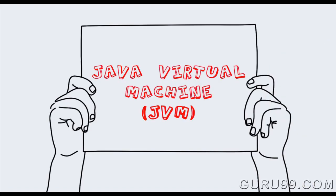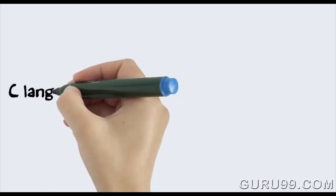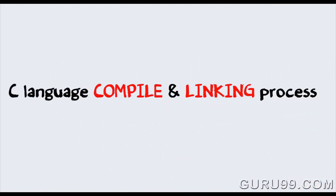To understand the compiling process in Java, let's first take a quick look at the linking process in C.